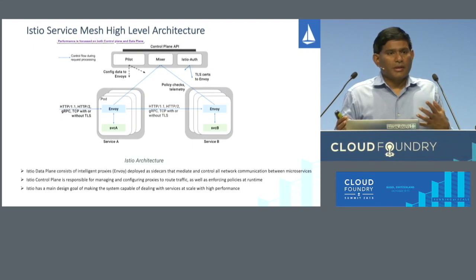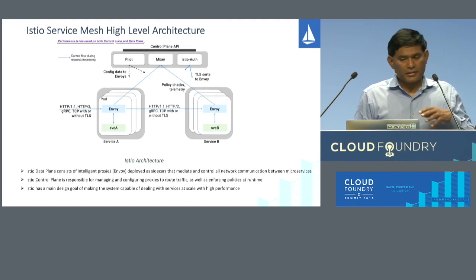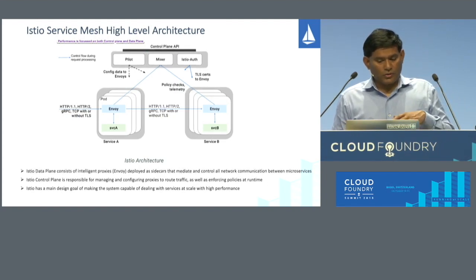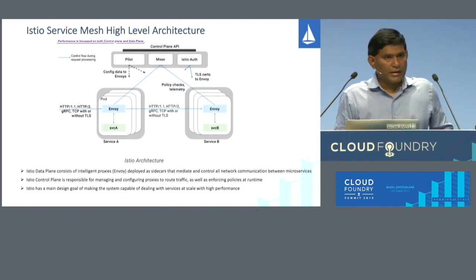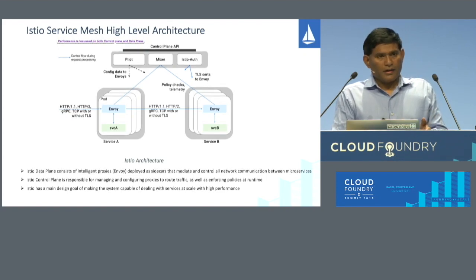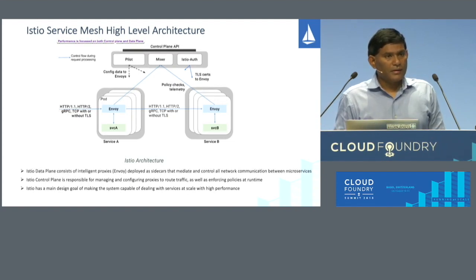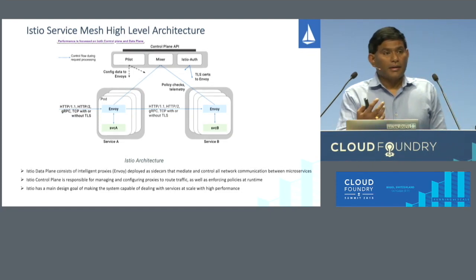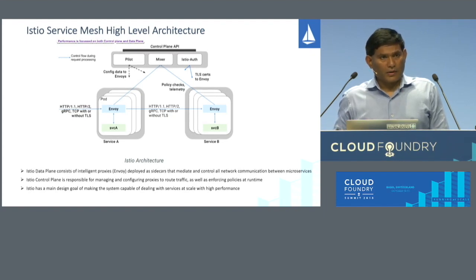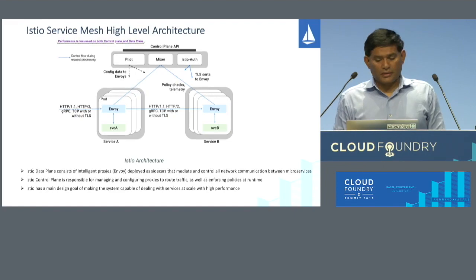Istio has two things: a control plane and a data plane. The control plane has Pilot, Mixer, and certificate management via Istio Auth. The data plane has intelligent Envoy proxies as sidecars attached to each of your services. Your service doesn't need to know where the other service resides because the Envoy sidecar proxy handles that. Pilot controls the sidecar, so through configuration you can adjust traffic management — canary testing, A-B testing, and all that stuff.